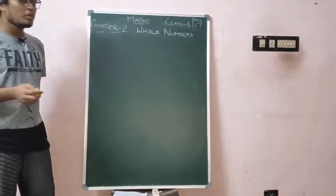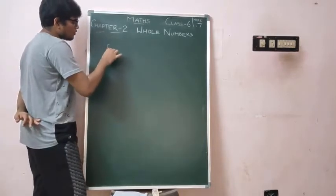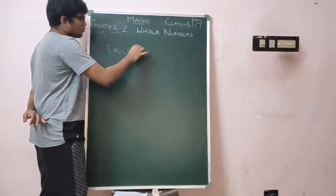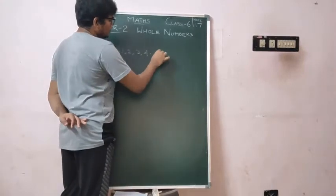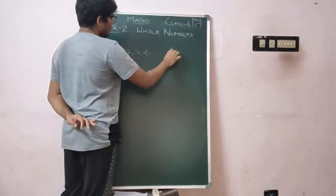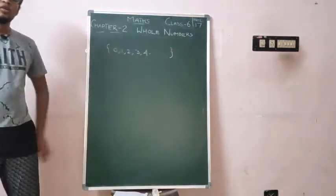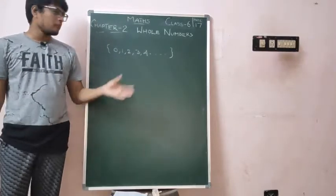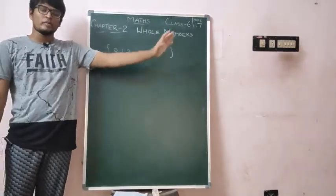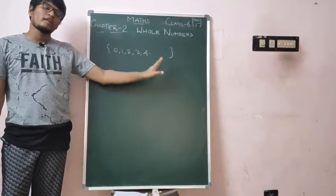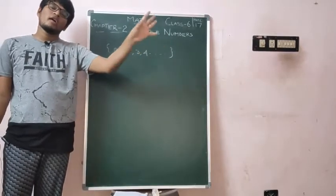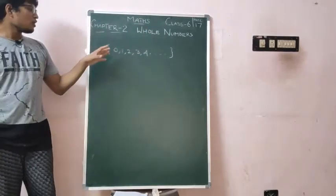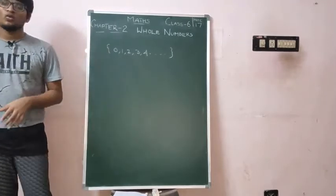So what is the set of whole numbers? It is 0, 1, 2, 3, 4, and so on. You can't stop them here — you can write till infinity. 5, 6, 7, 8, 9, 10, 11, 12. These are whole numbers.